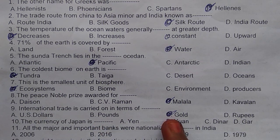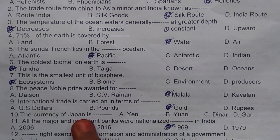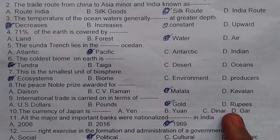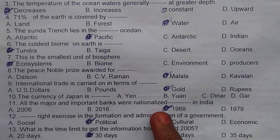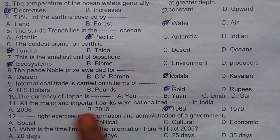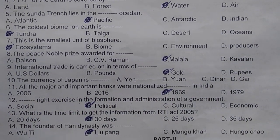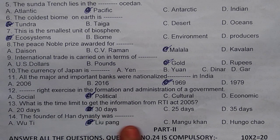9th question is C, 10th question is A — answer is D, tick. 5th question is C, 17th question is C, 12th question is B. 13th question is C, 12th question is C. OK, faculties.